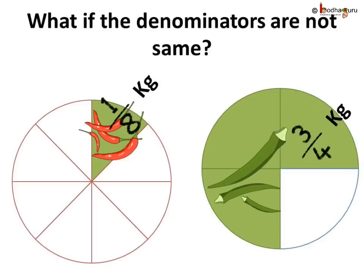Let us take another example. Khushi bought 3 by 4 kgs of ladyfinger and 1 by 8 kg of green chillies. How much vegetables did she buy in total? In 1 by 8, the denominator is 8, and in 3 by 4, the denominator is 4. The denominators are different, so the two fractions are unlike fractions. So we cannot add them directly.